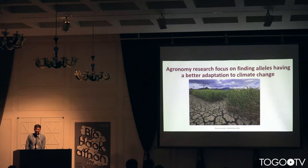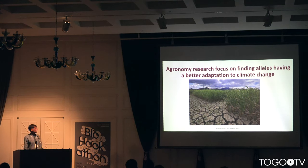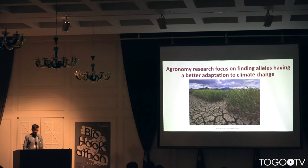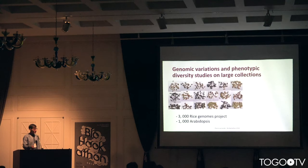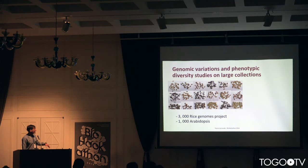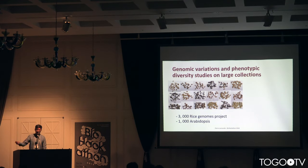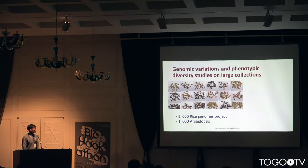The main focus of agronomy research today is to find new alleles having better adaptation to climate changes. There are several methods to find new alleles, such as combining genomic variation and phenotyping diversity studies on large collections, using methods such as genome-wide association studies and statistical methods. There are already many projects that aim to decipher this diversity.